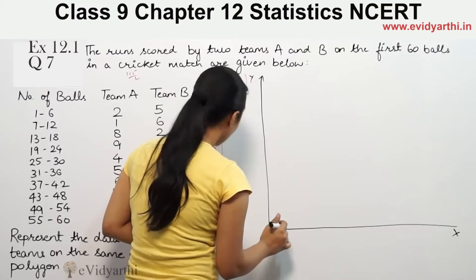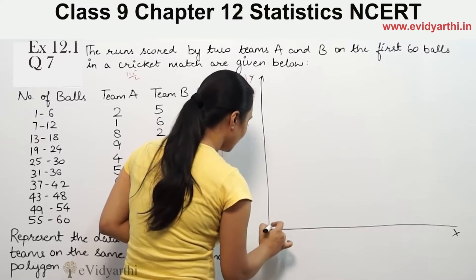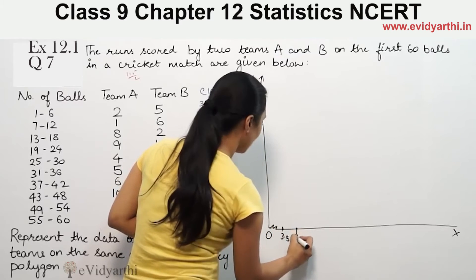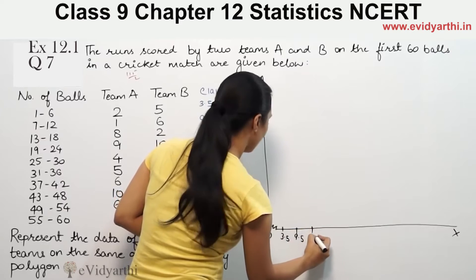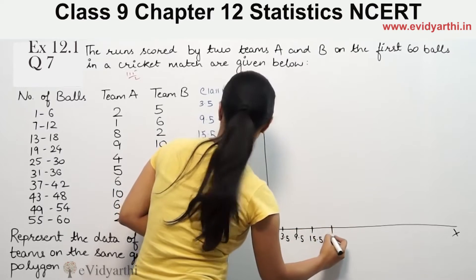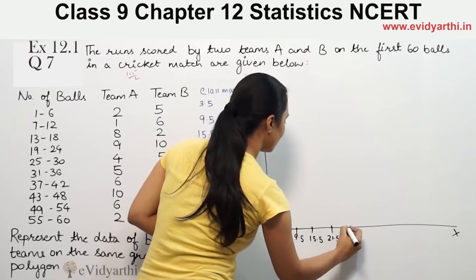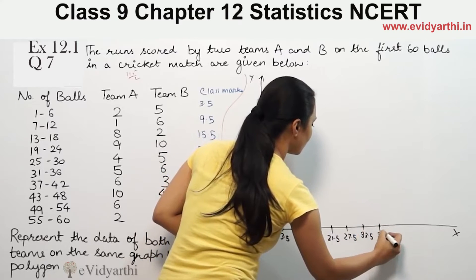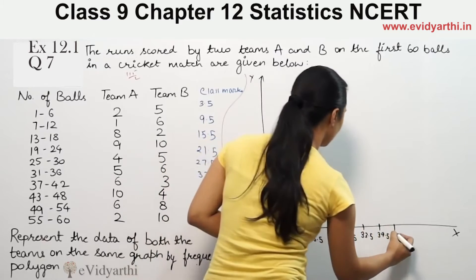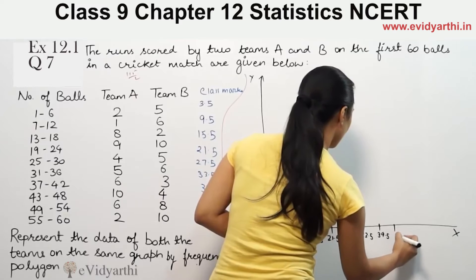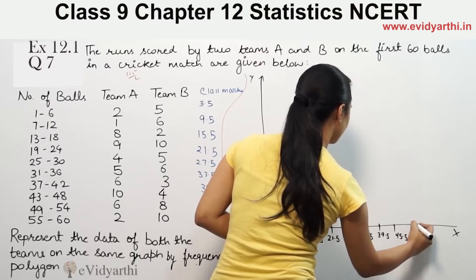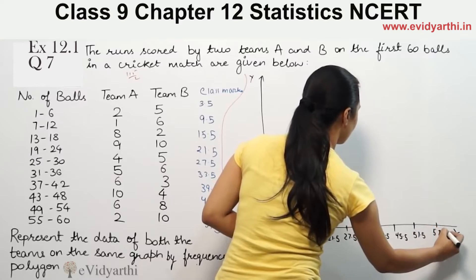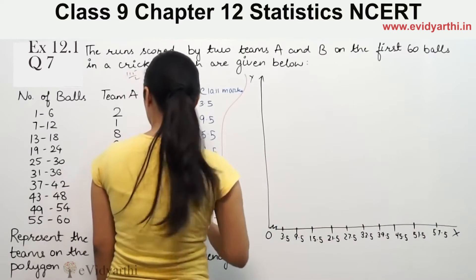Starting from 3.5 on the x-axis, then 9.5, then 15.5, then 21.5, then 27.5, then 33.5, then 39.5, then 45.5, then 51.5, then 57.5.